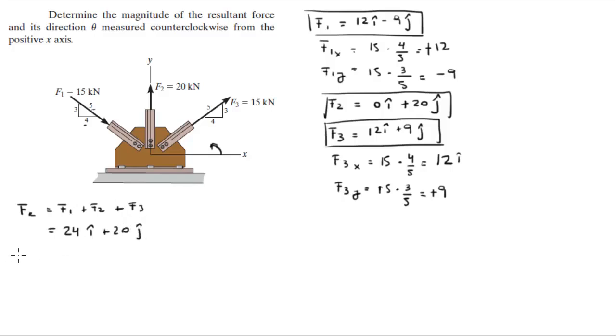And now you need to find the magnitude. The magnitude is given by the square root of the x-component squared plus the y-component squared, and it is equal to 31.24.